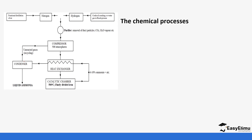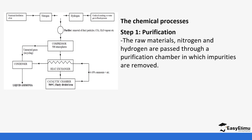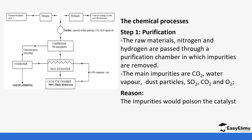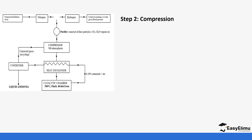The first stage from the diagram is the purification stage. This is where nitrogen and hydrogen are passed through a chamber where impurities are removed. Some of the main impurities are carbon dioxide, water vapor, dust particles, sulfur dioxide, and oxygen. Notice that some of these impurities are coming from air, since nitrogen is coming from distillation of air. The reason why these impurities are removed is to avoid poisoning the catalyst, which is easily poisoned by these impurities.